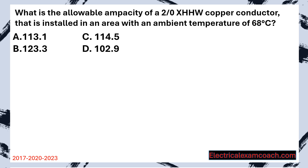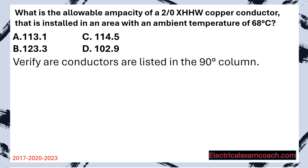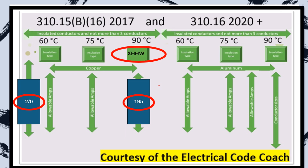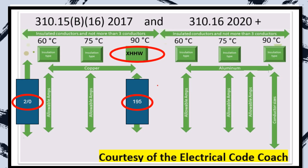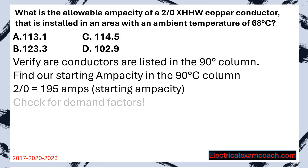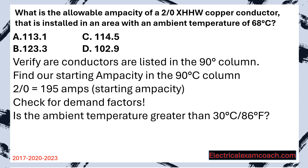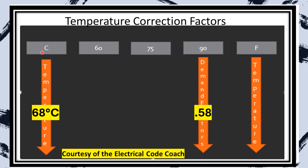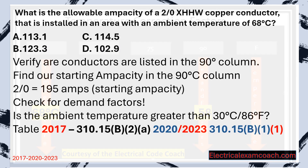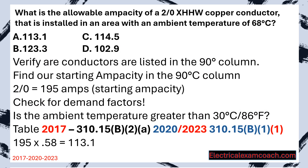Final problem: What is the allowable ampacity of a 2-aught XHHW copper conductor installed in an area with an ambient temperature of 68 degrees Celsius? Step 1, verify XHHW is in the 90 degrees C column — it's there. Find the starting ampacity: 2-aught copper crosses over to 195 amps. Check for demand factors — ambient temperature is greater than 30 degrees Celsius, so there is one. Head to the corrections table, start on the left-hand side because it's Celsius, cross over to the 90 degrees C column, and find a correction factor of 0.58. Multiply 195 by 0.58 for a new allowable ampacity of 113.1 amps. Select A.